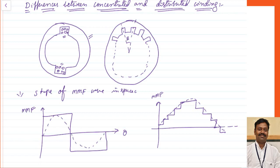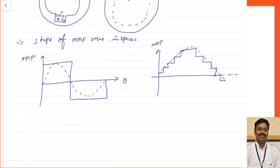This concentrated winding MMF wave can be resolved into multiple frequency components — one is the fundamental component and the higher order harmonics. Many harmonics will be produced in the EMF that is induced; that is the disadvantage of this. This wave is called a step wave or it is also called a trapezoidal wave.